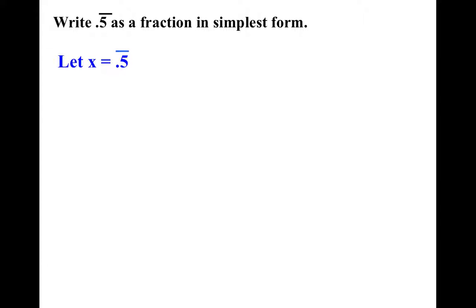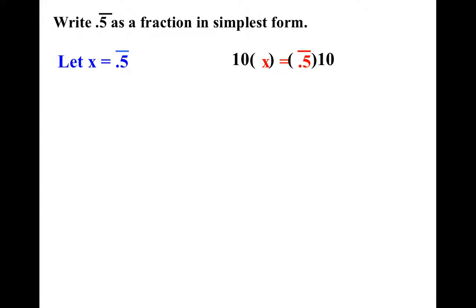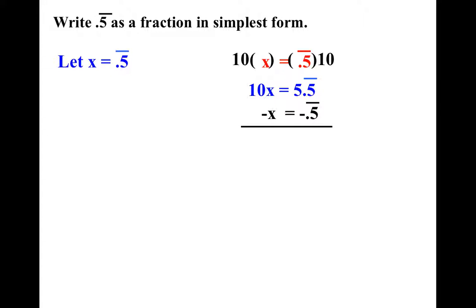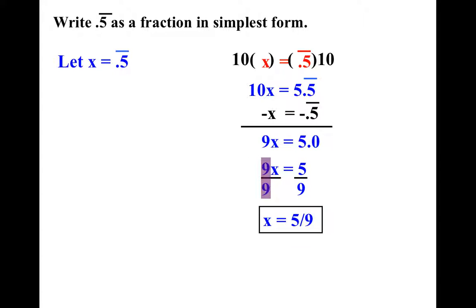Let's look at another one. If I have 0.5555555, I have no idea what fraction that is, so I'm going to say x equals all these 5's. I'm going to multiply both sides by 10. What it does is it slides the decimal point one spot, so now I have 10x equals 5.55555. If I subtract out the original equation, I still get 9x. All these 5's subtracting become 0's. So I divide by 9 and I get my answer.